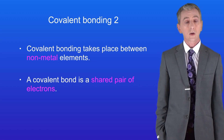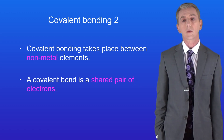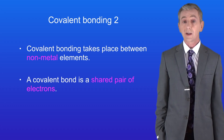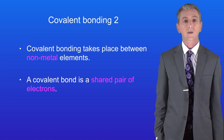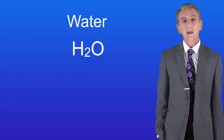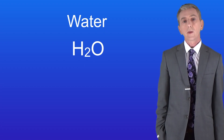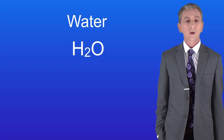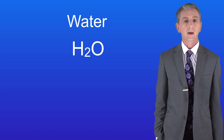In this video we're going to continue looking at small covalent molecules. These are really important and you could be asked about them in your exam. Let's start with water, which has the formula H₂O. From this we can see that a water molecule has two atoms of hydrogen bonded to one atom of oxygen.